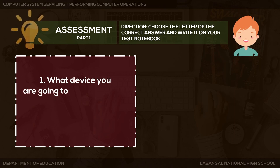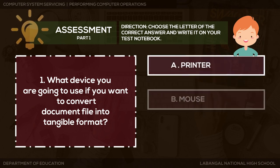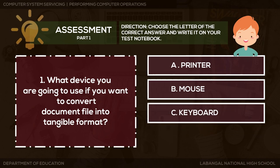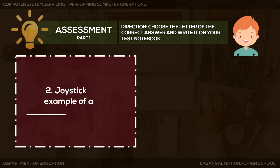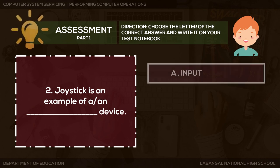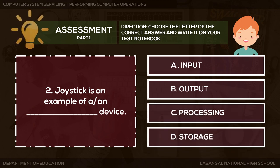Direction: Choose the letter of the correct answer and write it in your test notebook. Question 1: What device are you going to use if you want to convert document files into tangible format? A. Printer, B. Mouse, C. Keyboard, or D. Projector. Question 2: Joystick is an example of a blank device. A. Input, B. Output, C. Processing, or D. Storage.